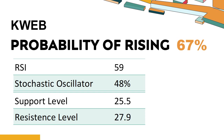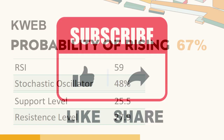KWEB's short-term support level is 26.3. If it falls below 26.3 during the session, it will have a chance to test 25.5. KWEB's short-term resistance level is 27.6. If it breaks through 27.6 during the session, it will look up to 27.9.